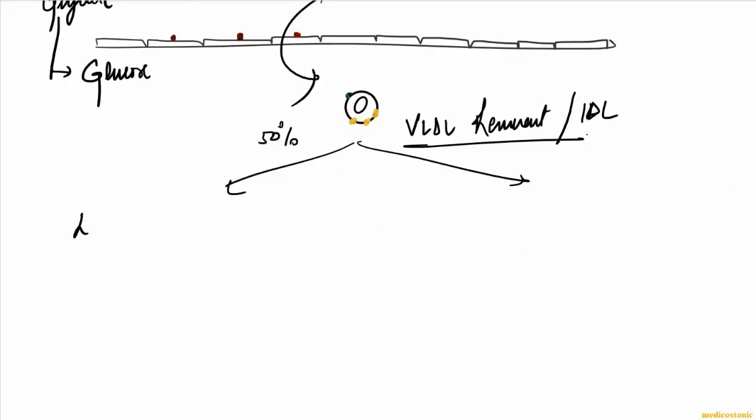LDL receptors present in hepatic cells recognize apo B100 and apo E which are present on the IDL remnant, and then it is cleared by liver.